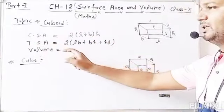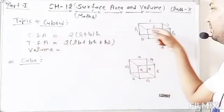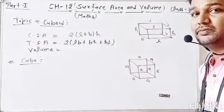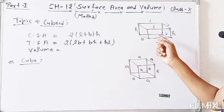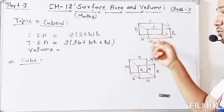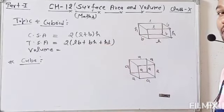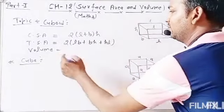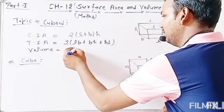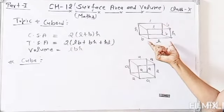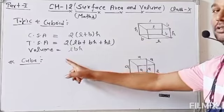Likewise, total surface area of a cuboid - the outer portion of a cuboid. And last is volume of a cuboid, which is LBH. Base area - if you take the product with height, then it will be the volume.